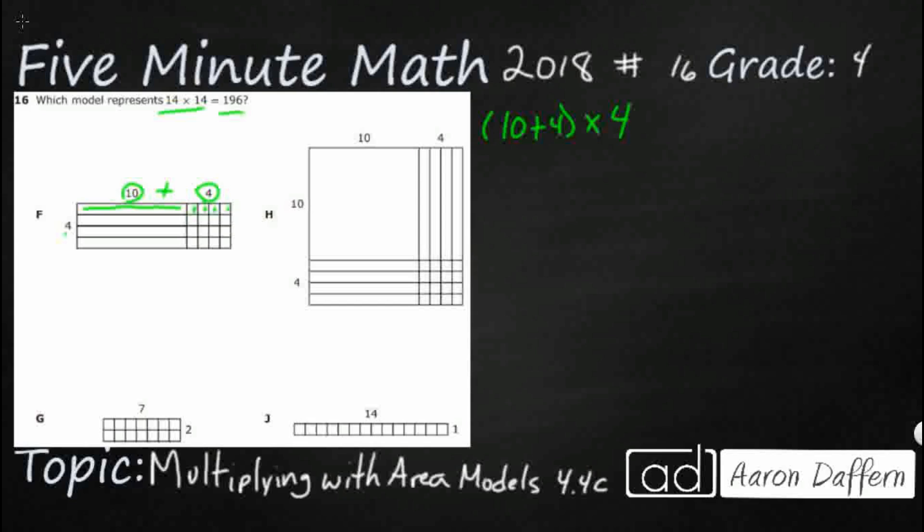And so we can use our distributive property. Let's just go ahead and kind of put that back together if we wanted to. So if we wanted to put that back together, 10 plus 4 makes 14. So we could just do a 14 times 4. Add those two together, and that's going to be 16, that's 56.